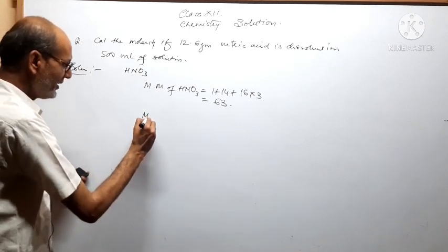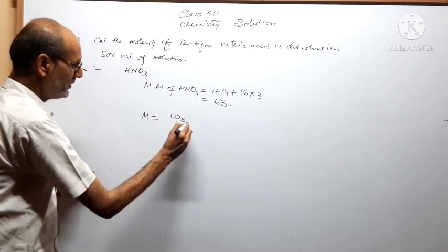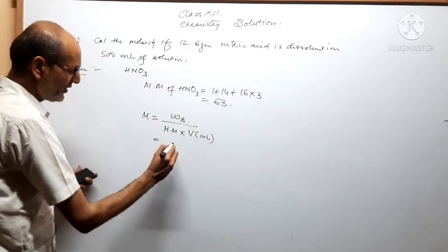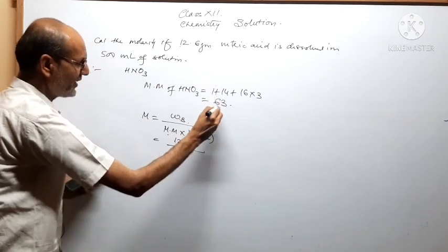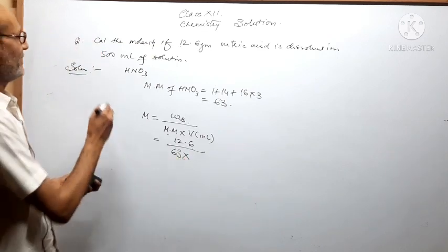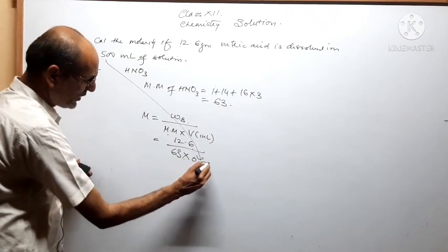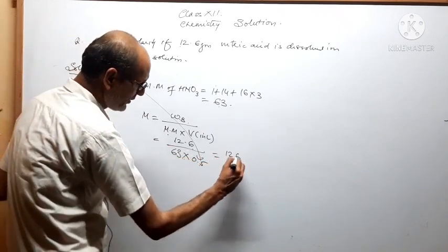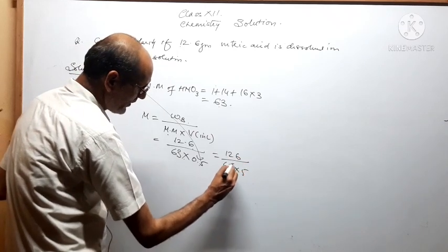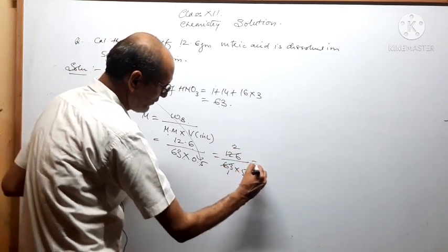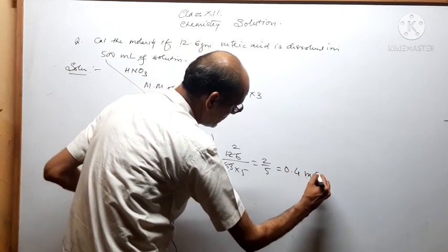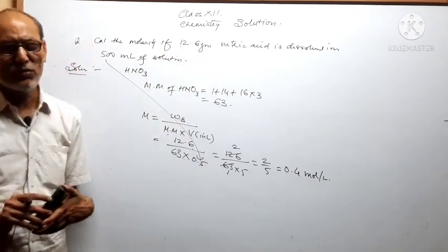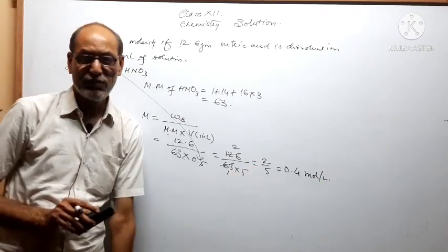W_B = 12.6 g, MM = 63, and volume = 500 ml = 0.5 L. So M = 12.6 / (63 × 0.5) = 12.6 / 31.5 = 0.4 mol/L. Therefore, the molarity of the solution is 0.4 mol per liter when 12.6 gram of nitric acid is dissolved in 500 ml of solution.